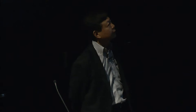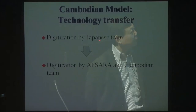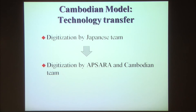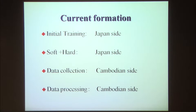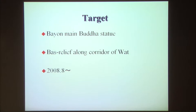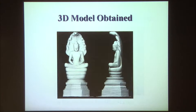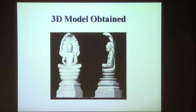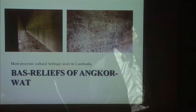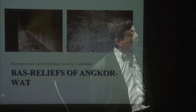One example of collaboration in Cambodia is technology transfer to Cambodian people. Originally digitization was done by the Japanese team, but recently Cambodian people do the digitization themselves, after initial training given by us, with software and hardware we provide. Data collection and data processing are done by Cambodian people. One example is the Yama Buddha bas-relief in Angkor Wat. Once they digitize, they obtain cross-sections, and Cambodian people are carving physical copies of the Buddha. We are also digitizing bas-reliefs of Angkor Wat.